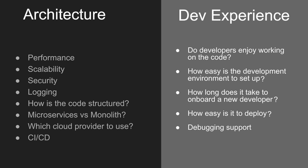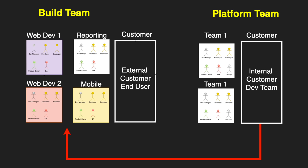To help with architecture and developer experience, you can create a platform team. As you can see in this diagram, the build team has a customer, and that customer is an external customer — the end user that will be using the software. The platform team has an internal customer, and that's the build teams. Hence, the platform team is going to be treating the platform as an internal product that has an internal customer.